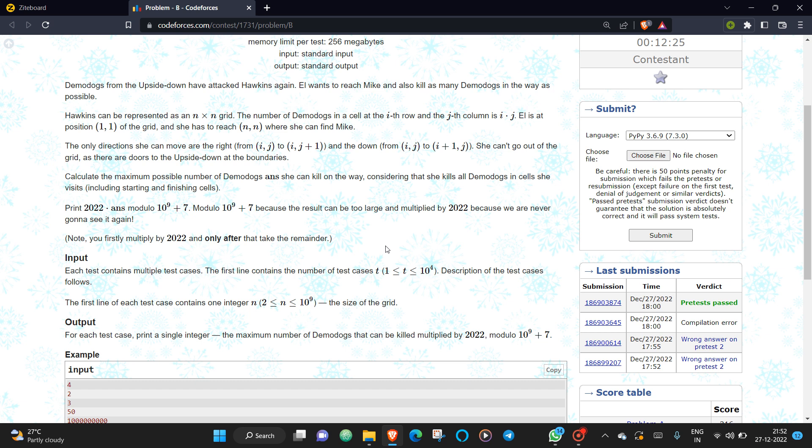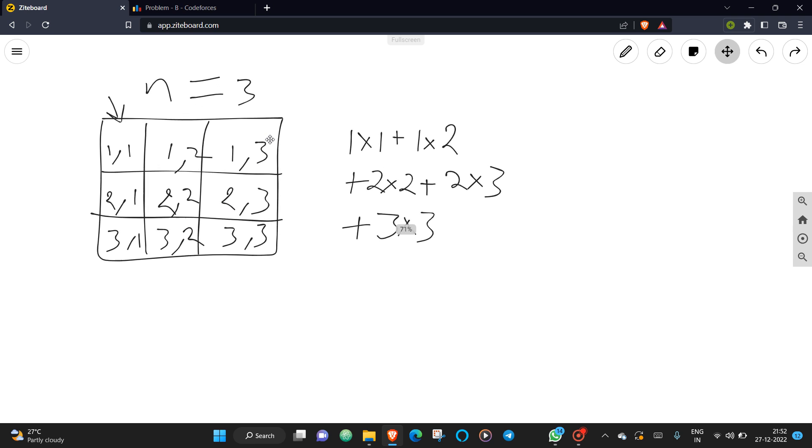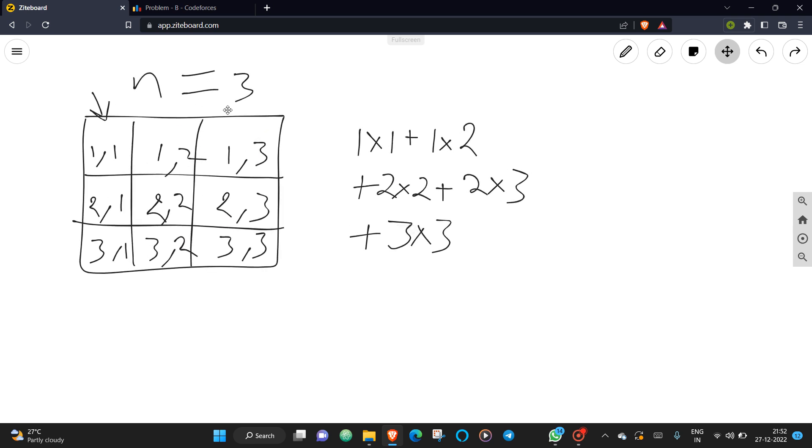You need to print your answer as 2022 times answer modulo mod. Let's understand the test case for n equals 3. You can observe that the maximum path will be the sum of the diagonals and the line above.